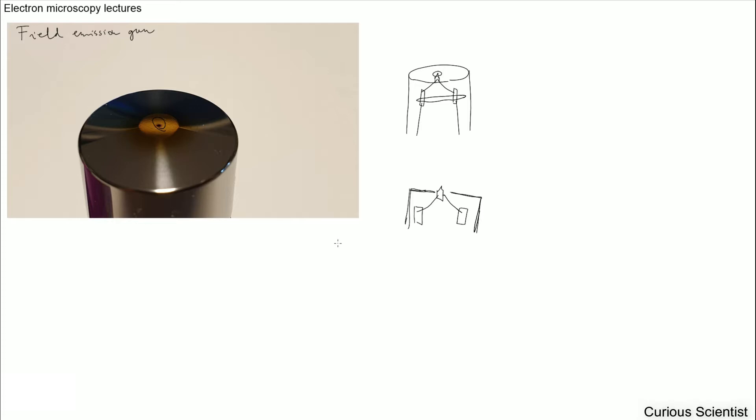This is the best type of emitter or gun. You can reach very high current densities with this type of gun and a very good beam. This should be used in state-of-the-art microscopes in order to get really good image quality.